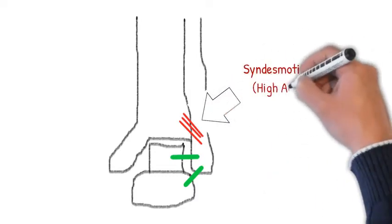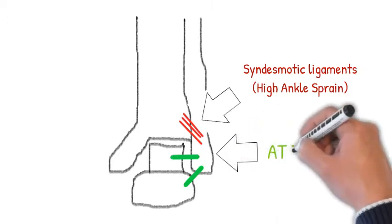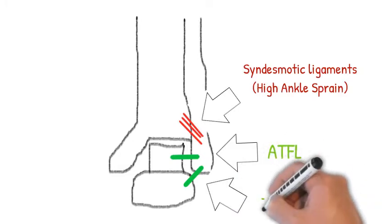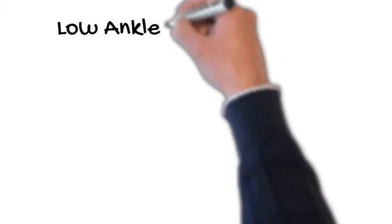The drawing here shows the red ligaments - they're the syndesmotic injuries that are associated with a high ankle sprain. The ligaments in green are the ATFL and the CFL, the ligaments that are commonly involved in a low or common ankle sprain that we're more aware of.